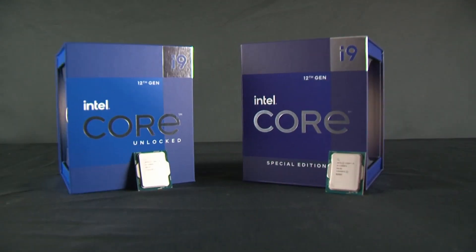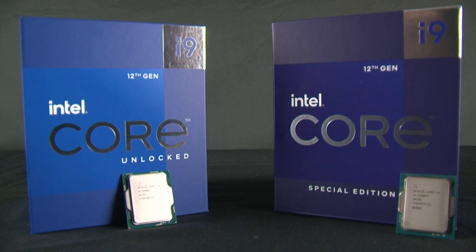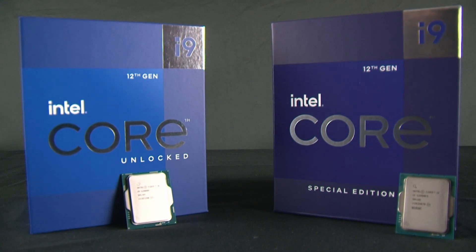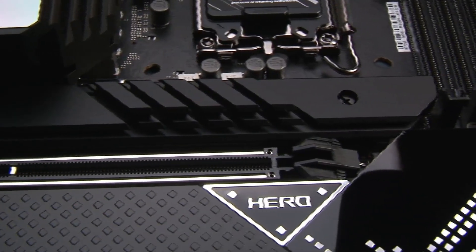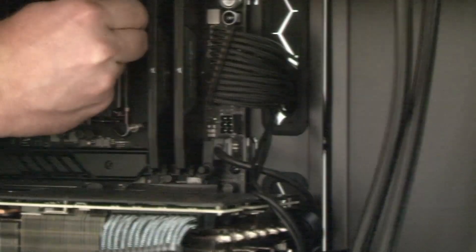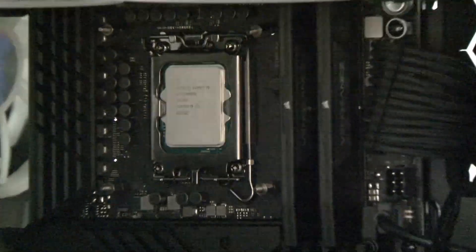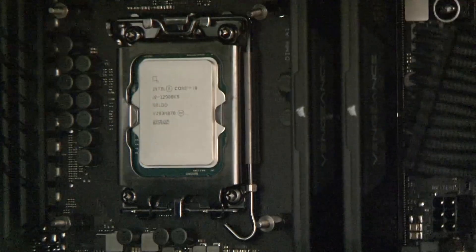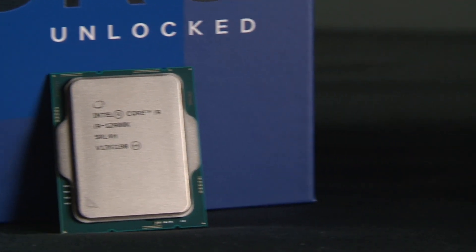On the surface, there seems to be very little difference between the i9-12900K and the i9-12900KS. Both have the same number of cores and threads, support for DDR5 and PCIe 5.0, and of course use the same LGA1700 socket. These are pretty much similar CPUs in terms of physical looks and base features.